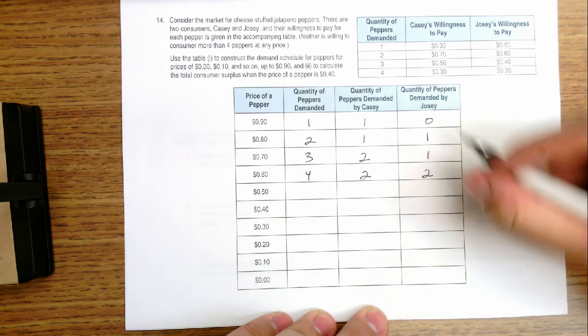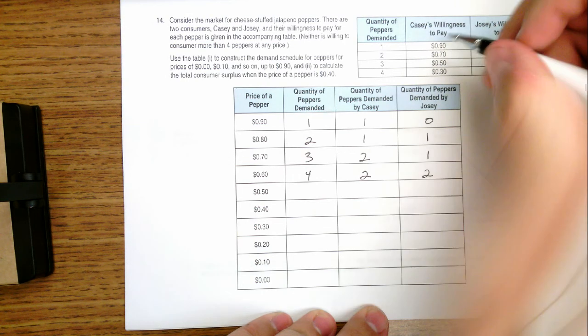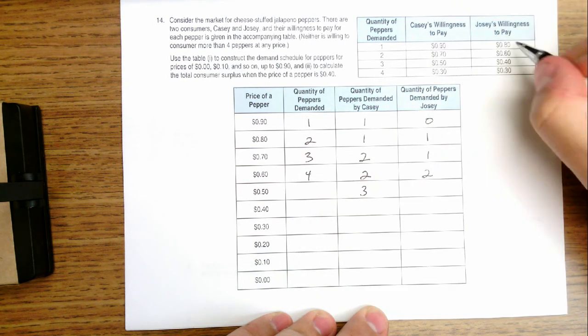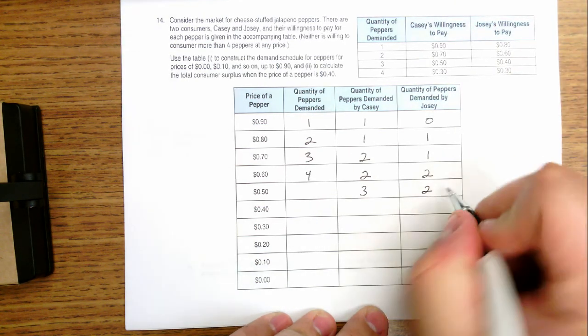At $0.50, Casey's willing to buy three. Josie still only willing to buy two. So the total would be five.